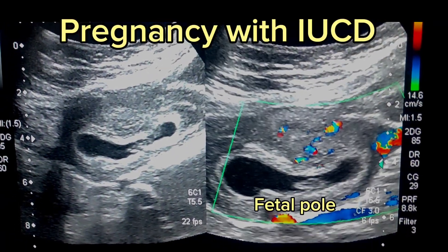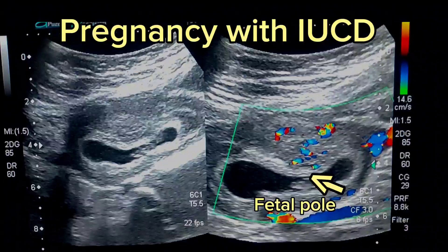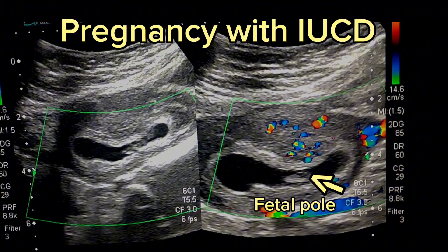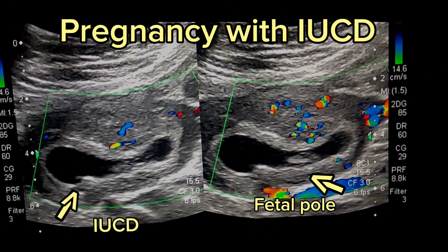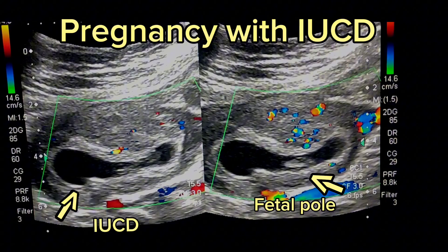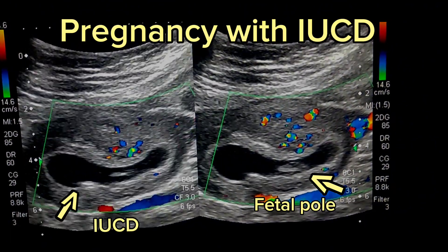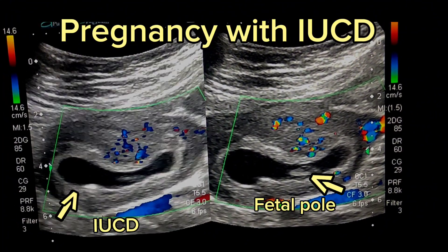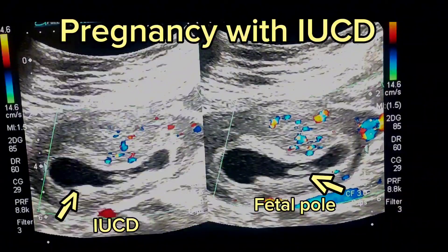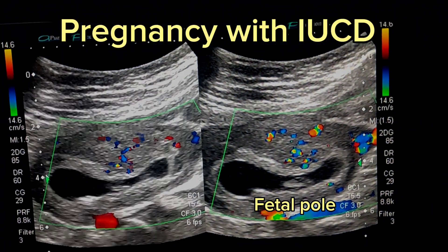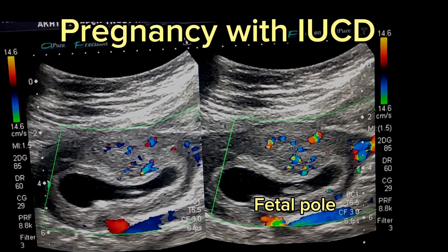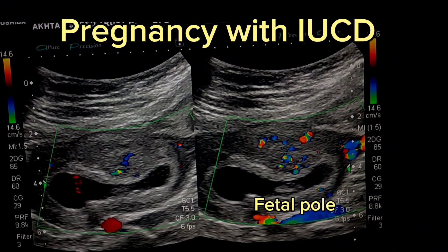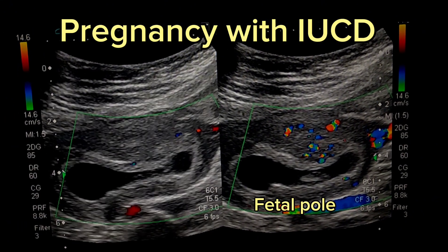I am Dr. Saima Khan and today my presentation is pregnancy with an intrauterine contraceptive device. IUCDs or intrauterine contraceptive devices are among the most effective reversible contraceptive methods. Failure rates are very low. However, pregnancies can occur in these cases. Co-existence of pregnancy and an IUCD poses a unique challenge for doctors and patients.